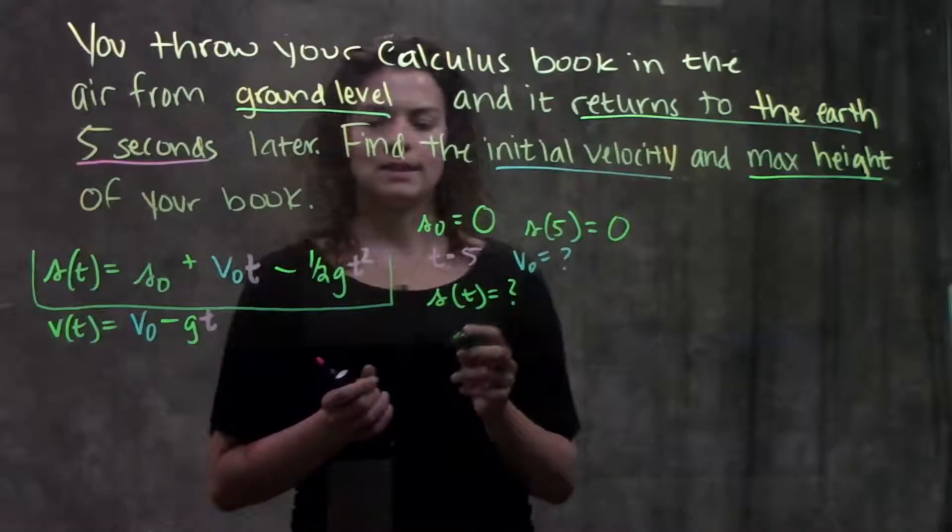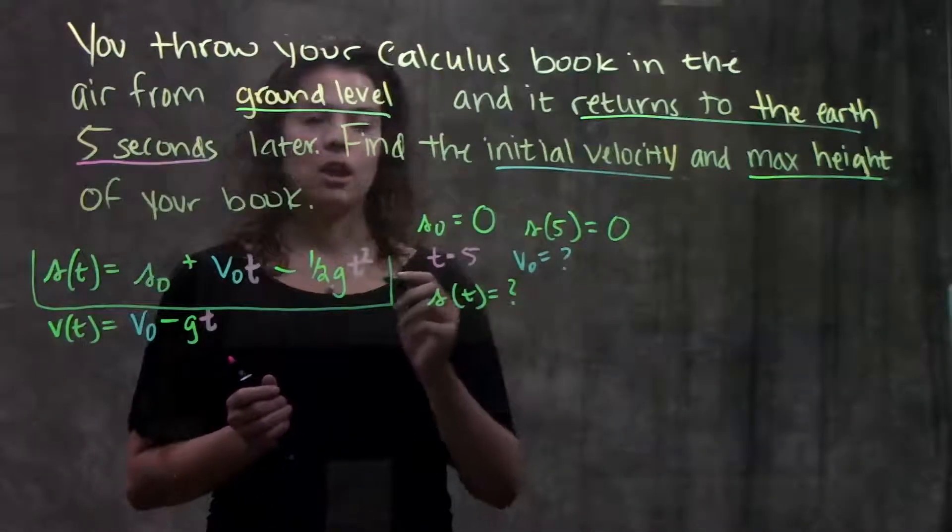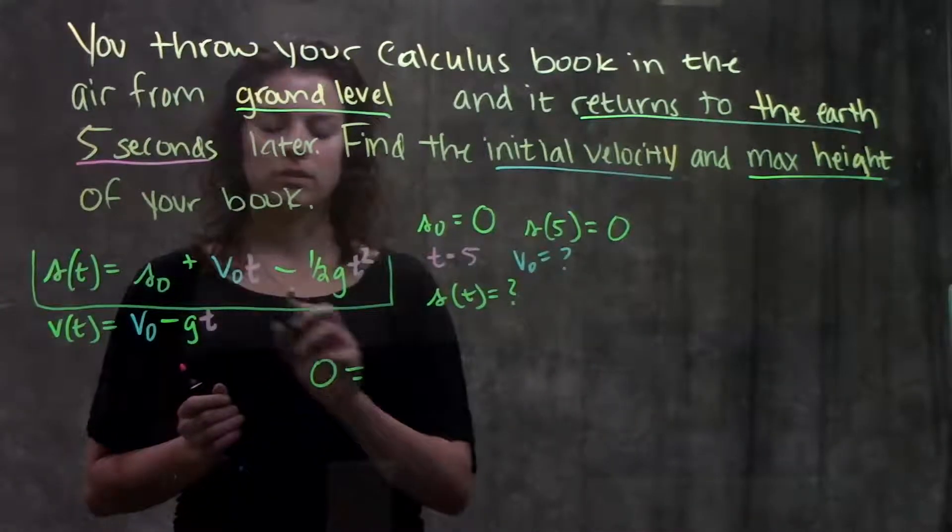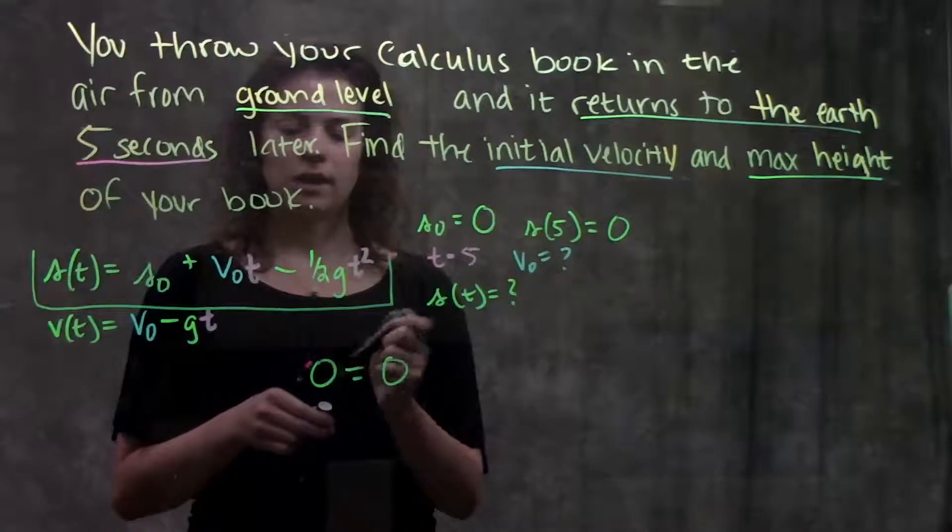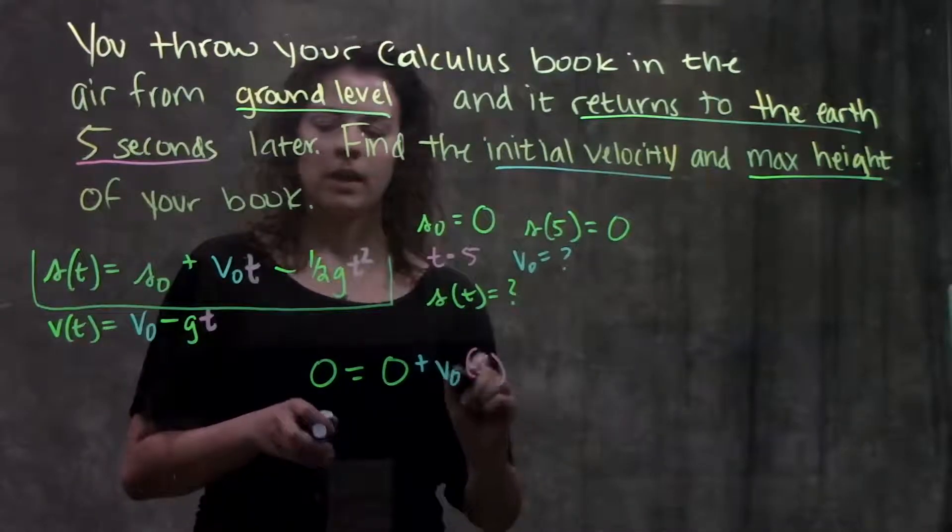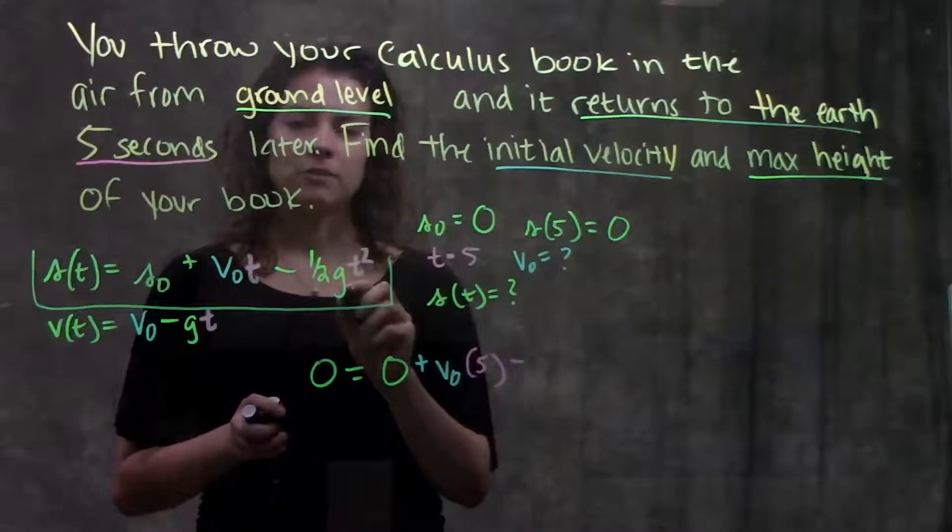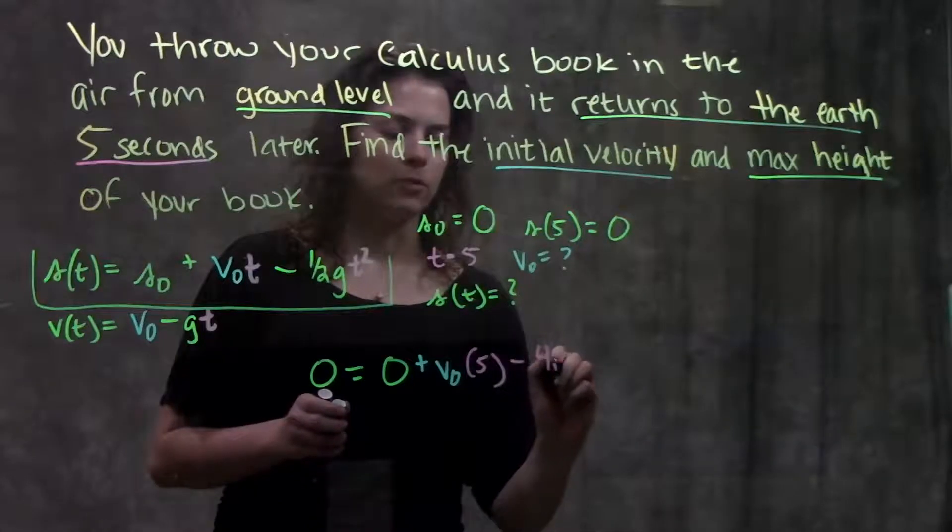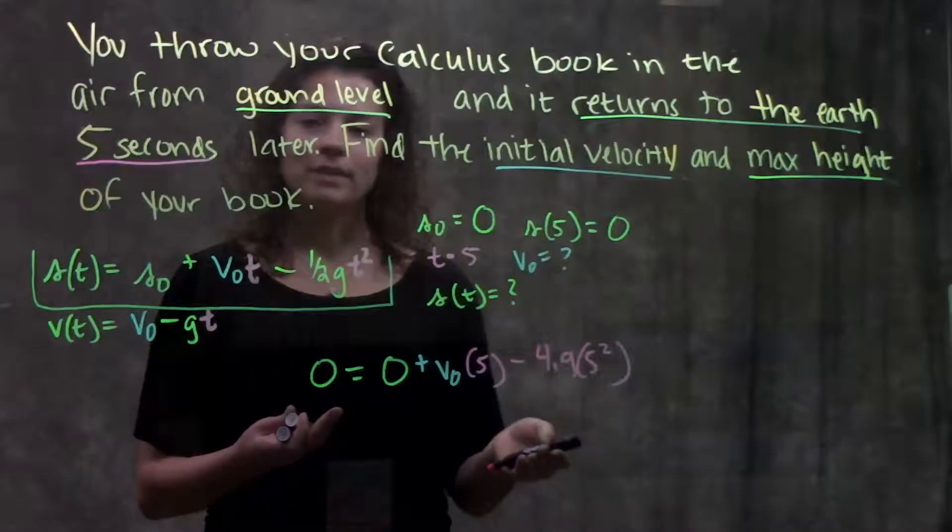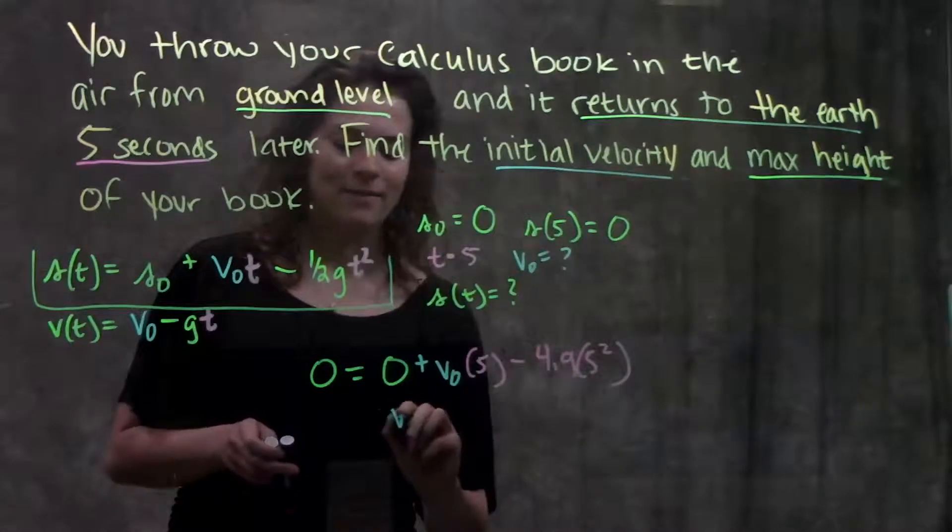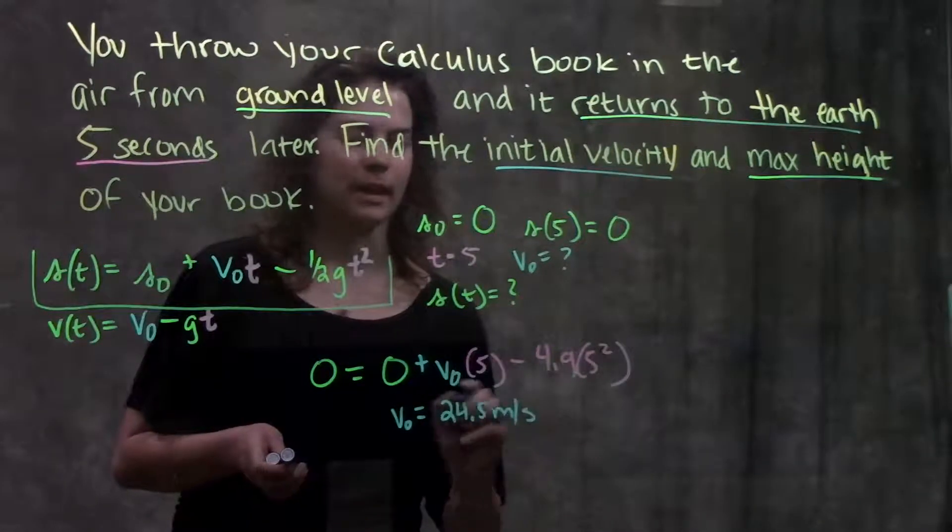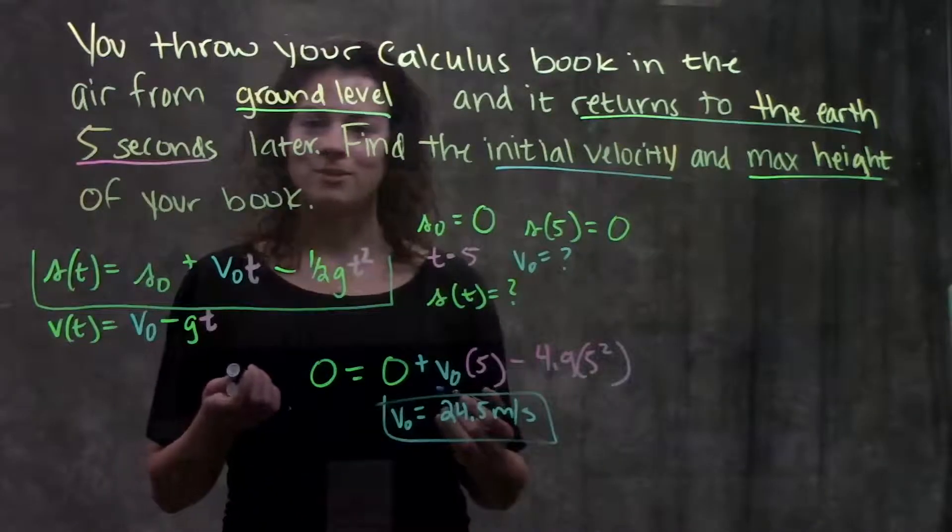Okay so let's plug everything in that they gave us. So using this function I can plug in all my values. My s(t) or my s(5) is zero equals my s₀ is also zero plus v₀t. V₀ is my unknown but my time I know is five minus one half g that's just one half times nine point eight becomes four point nine times t squared which is just five squared. Alright you solve all this out. Solve for v₀ and you end up getting that v₀ is equal to twenty four point five meters per second.